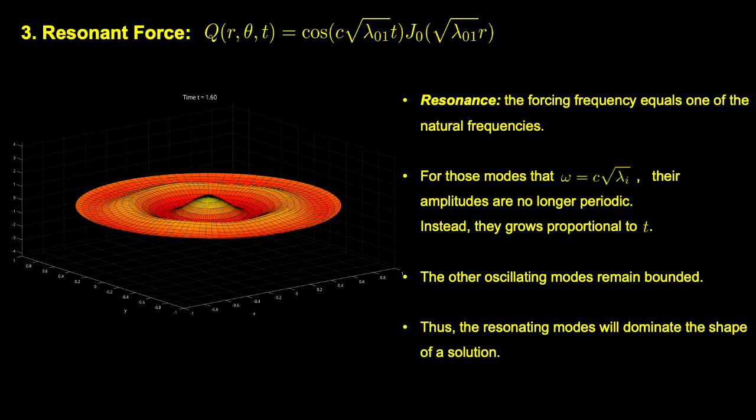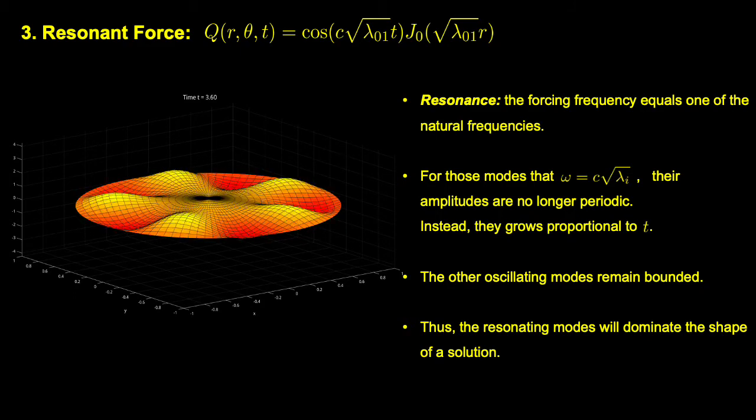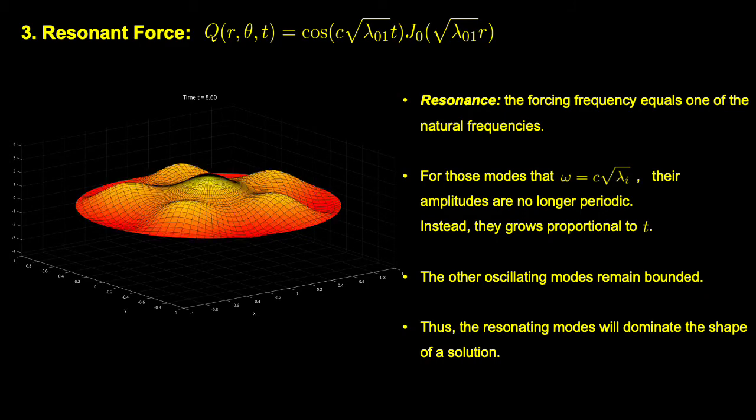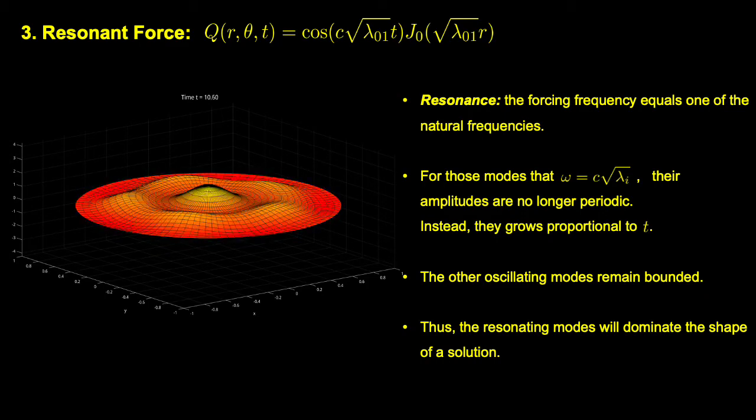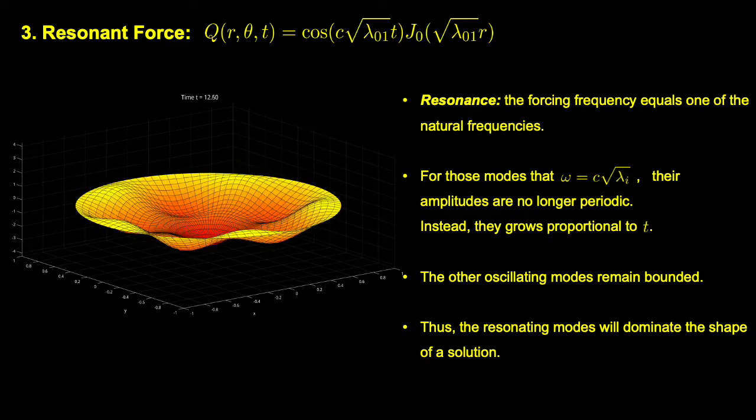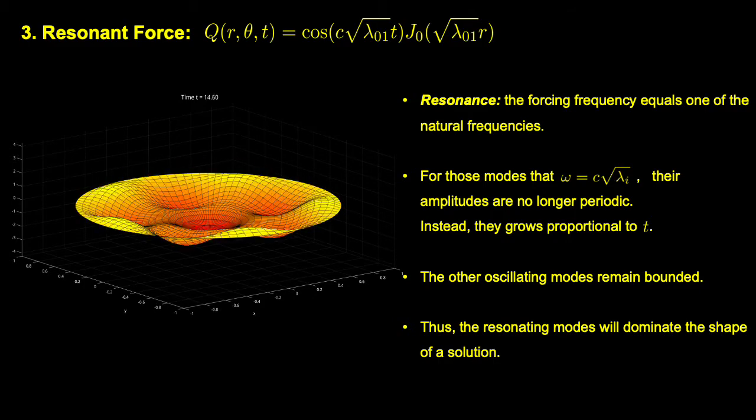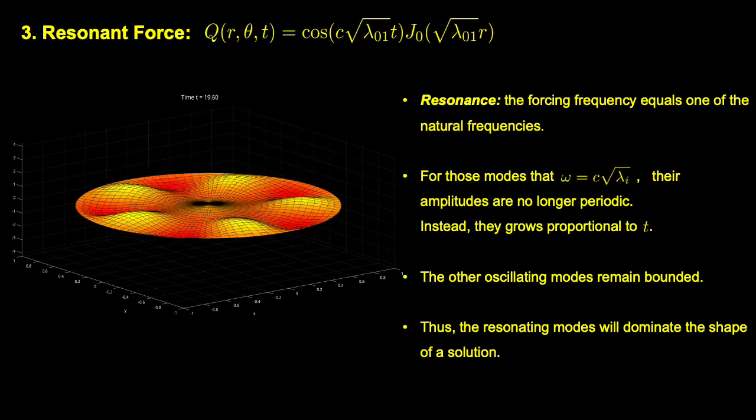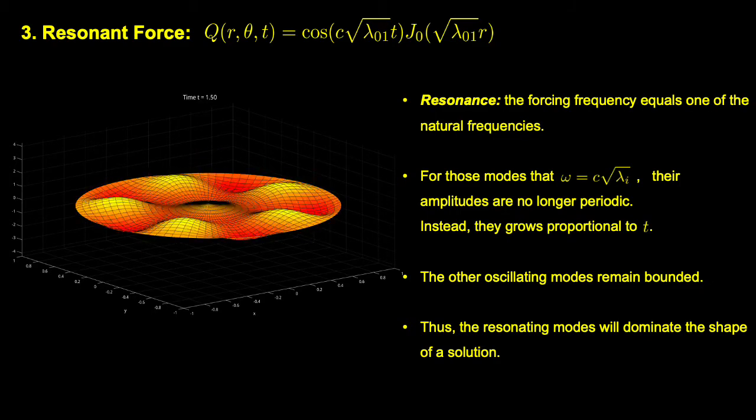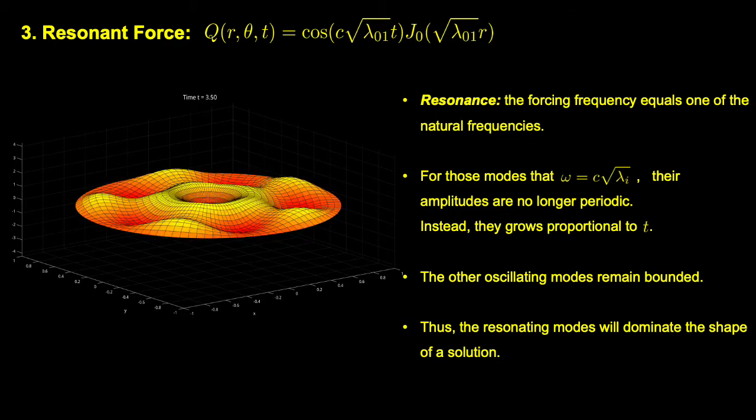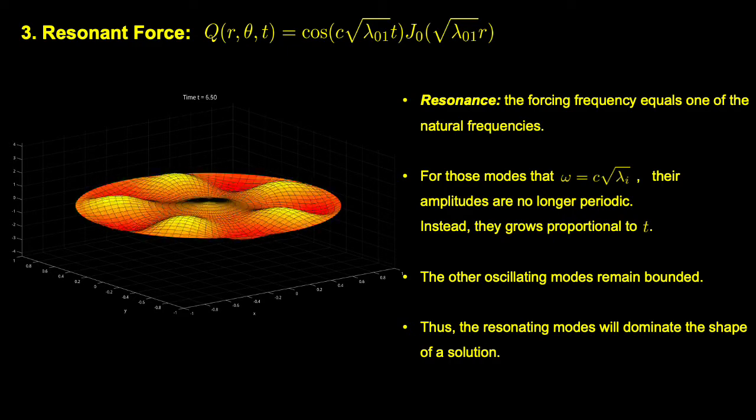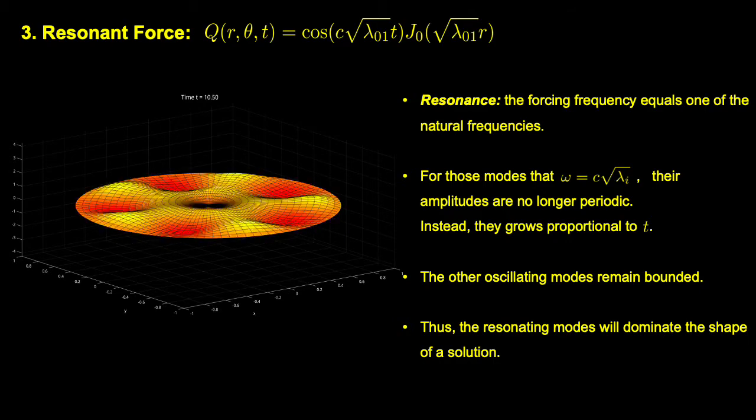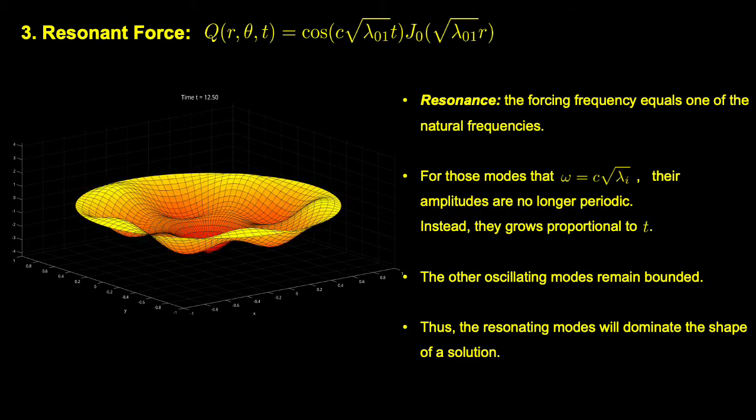In the last example, a phenomenon called resonance occurs because the forcing frequency equals one of the natural frequencies. For those modes that forcing frequency equals natural frequency, their amplitudes are no longer periodic. Instead, they grow proportional to t. The other modes remain bounded. Thus, the resonating modes will dominate the shape of the solution after a while.